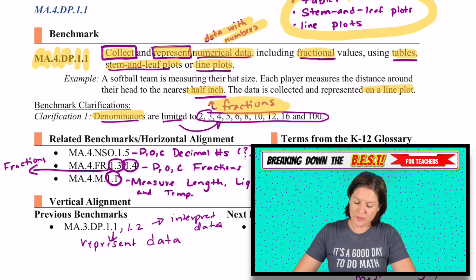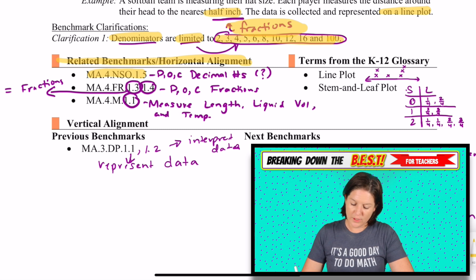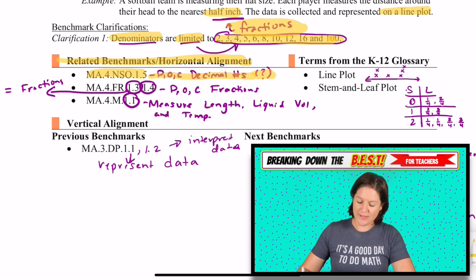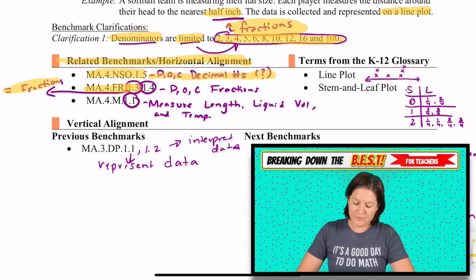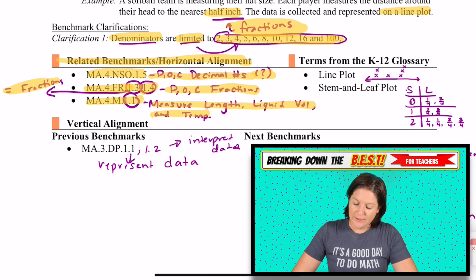For benchmark clarifications, it says denominators are limited to the following. And then some related benchmarks in fourth grade. We've got MA.4.NSO.1.2, which is plotting, ordering, comparing decimal numbers. I understand with fractions, but I'm not really sure why decimals relate. We also have 4.FR.1.3, which involves equivalent fractions, and 1.4, which is that plotting, ordering, comparing fractions. We have 4.M.1.1, measuring length, liquid volume, and temperature, kind of collecting that data and representing it here. So that can definitely play a role with this standard.